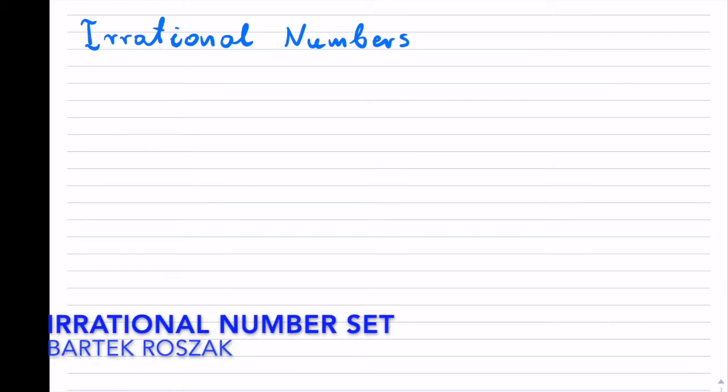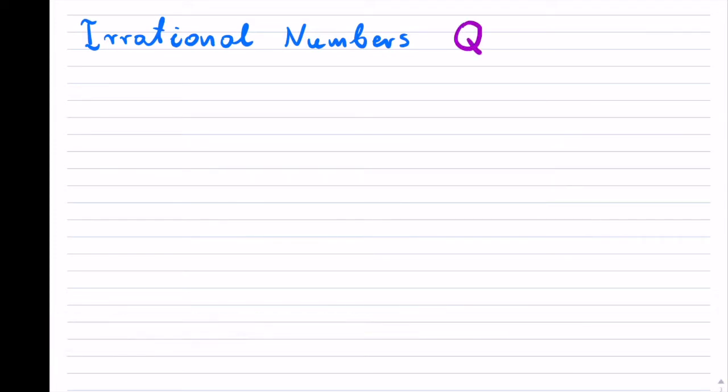Irrational numbers, or the irrational number set. So this one is interesting. We actually write this as Q, which you may remember from previous videos if you watch them. It represents rational, and when you put a little bar over it, it means irrational.